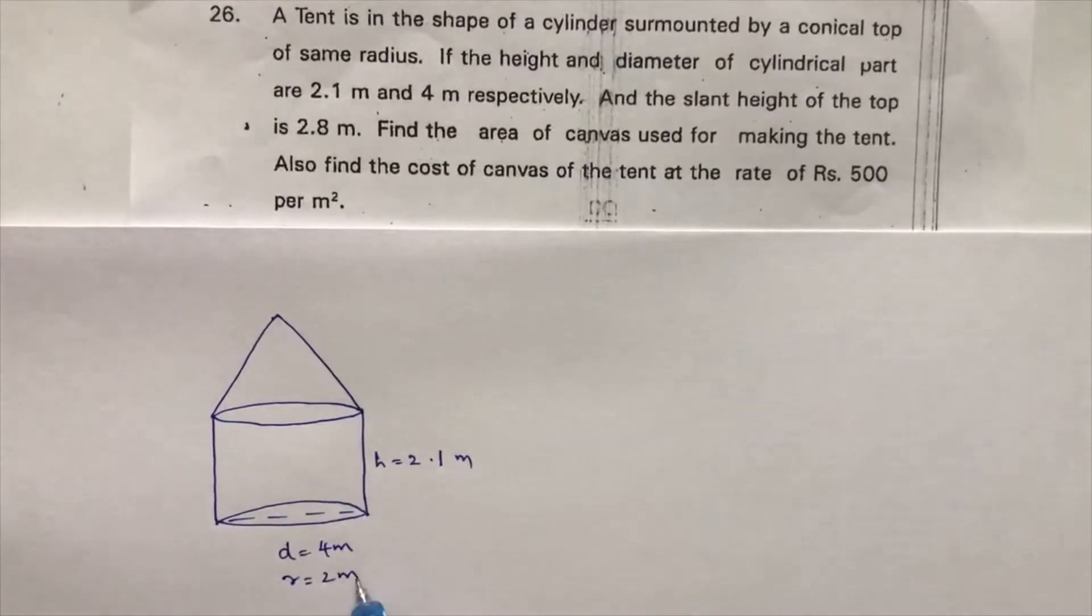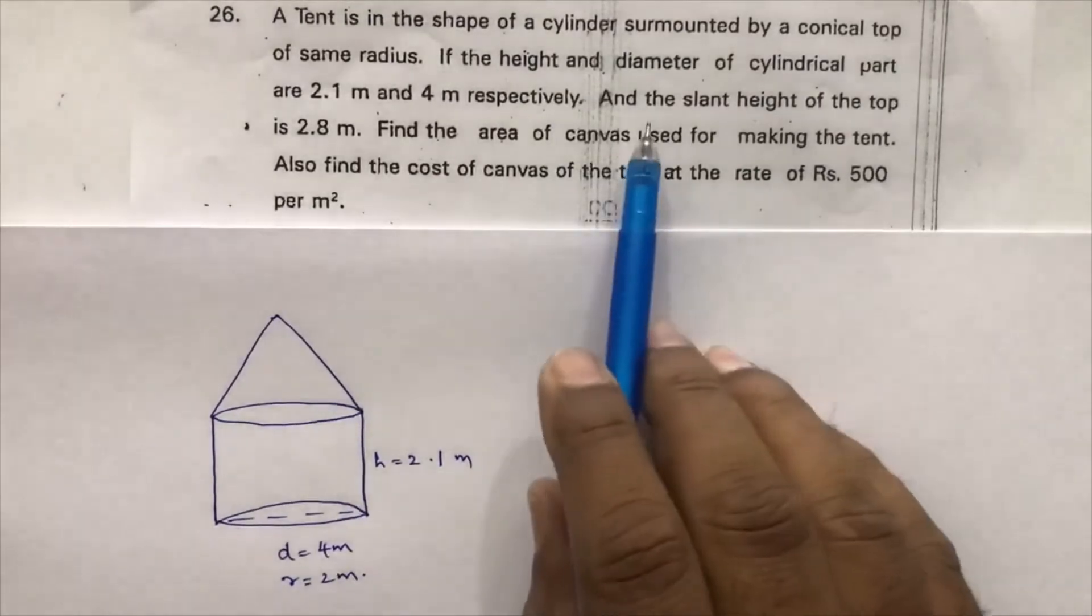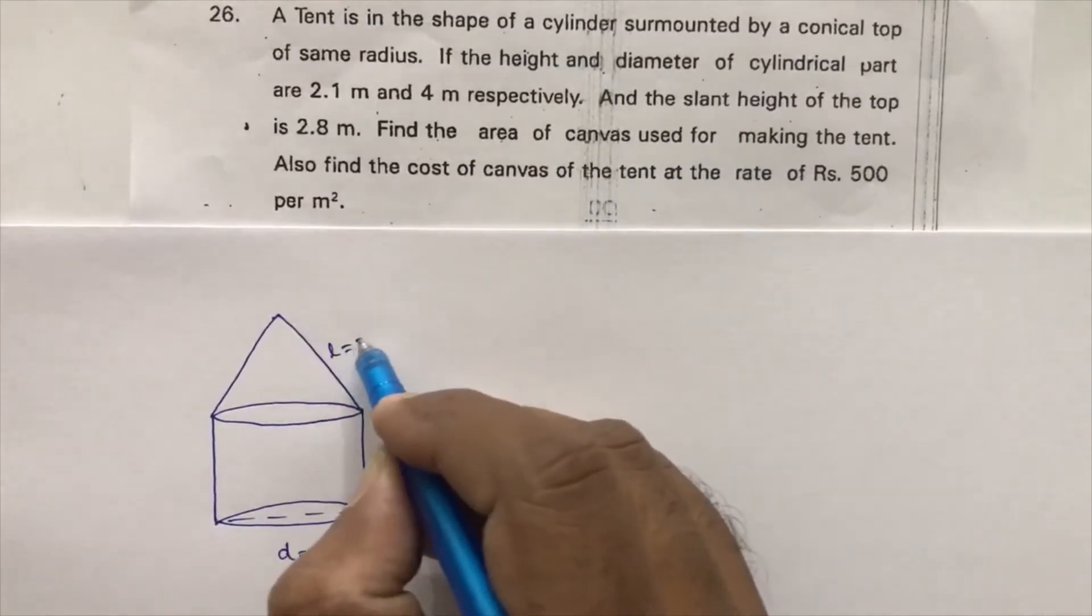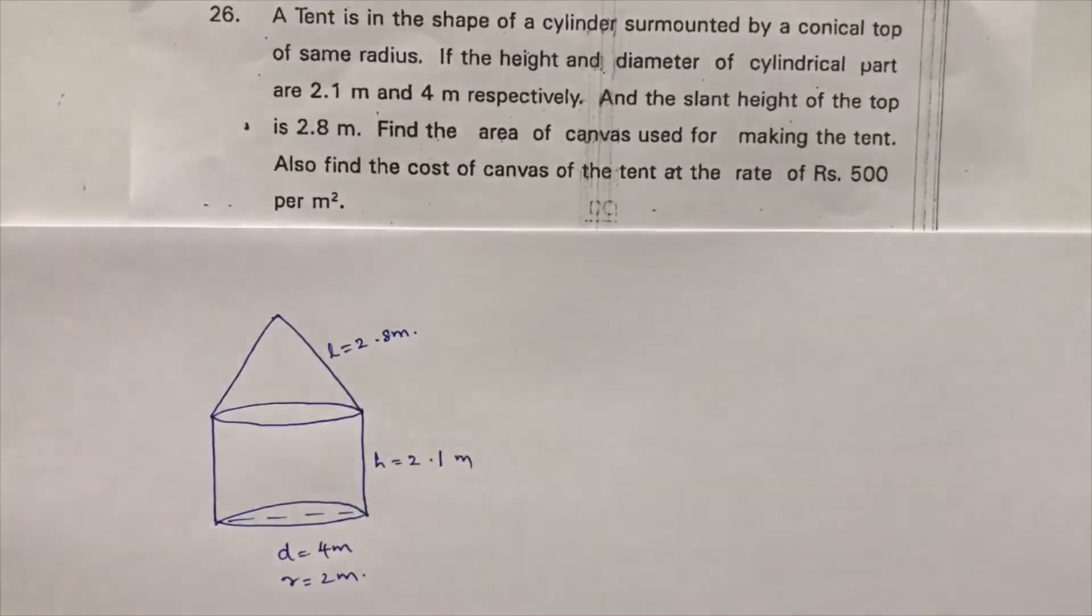So radius will be 2 meters. And the slant height of the top, that is the conical part, is 2.8 meters. Find the area of canvas used for making the tent.